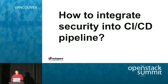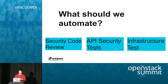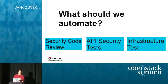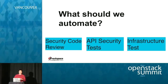Since we want to integrate security into the CICD process, the key is automation. For security, there are three types of security testing we talk about: first, static code analysis; second, dynamic application testing — for OpenStack, mostly API security testing; and third, infrastructure testing, which is basically scanning the network and servers to check for open ports and outdated software.